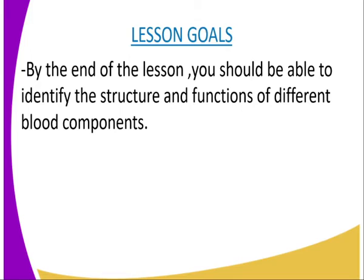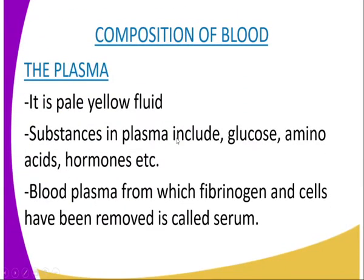The blood plasma consists of the red blood cells, which we can call the erythrocytes. We also have the white blood cells, which we can call the leukocytes, and we have the platelets, which are normally known as thrombocytes. Now we are going to have our first blood component, which is the plasma.